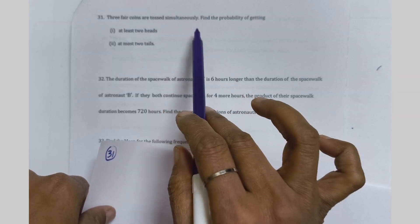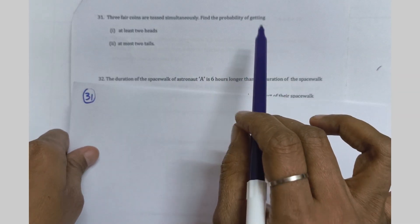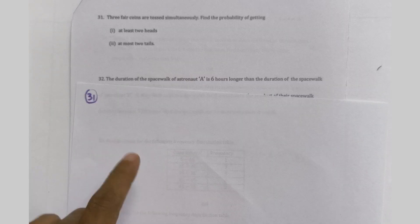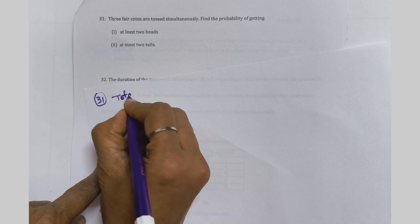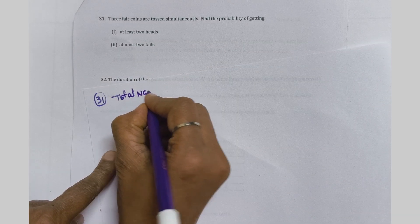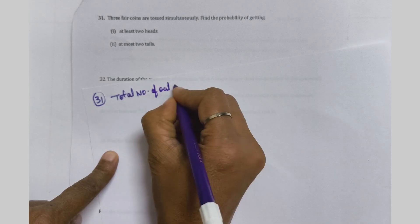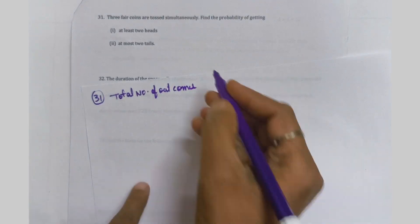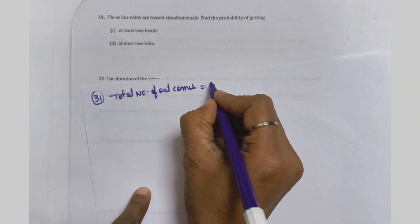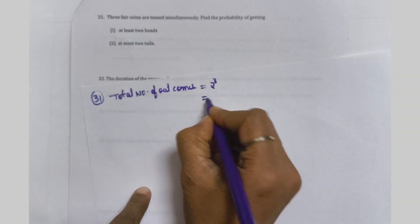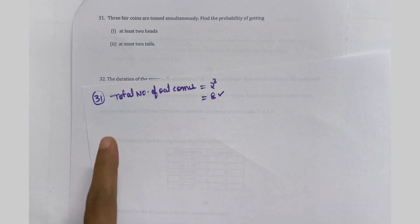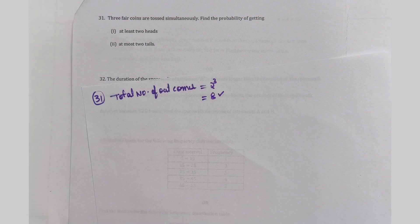3 fair coins are tossed simultaneously. Find the probability of getting... When 3 coins are tossed, first we will find the total number of outcomes. 3 coins means 2 to the power of 3 outcomes. 2 to the power of 3 means 8. So 3 coins tossed means 8 total outcomes.